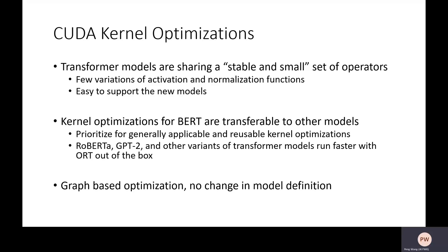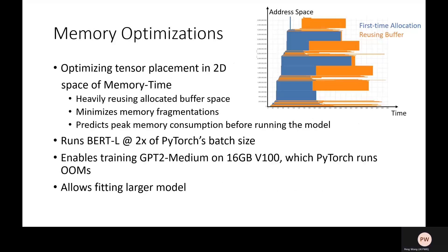We also provide good coverage for different graph-based optimizations, essentially kernel fusions, in-place computations, and so on. Memory efficiency also plays an important role in better performance. With buffer reusing and minimizing memory fragmentation, ORT could run 2x the BERT model size compared to PyTorch, as we mentioned earlier. Similar observations apply for GPT-2 medium training — we could train it on a 16GB V100 while PyTorch hits out-of-memory issues. This memory saving would benefit large model training as well.